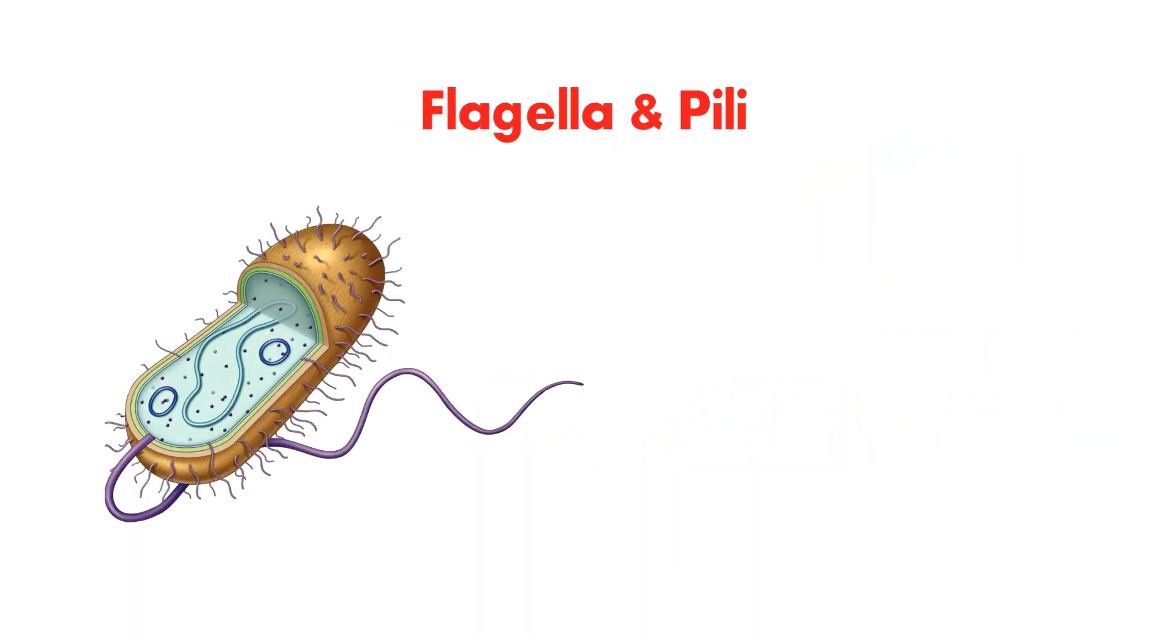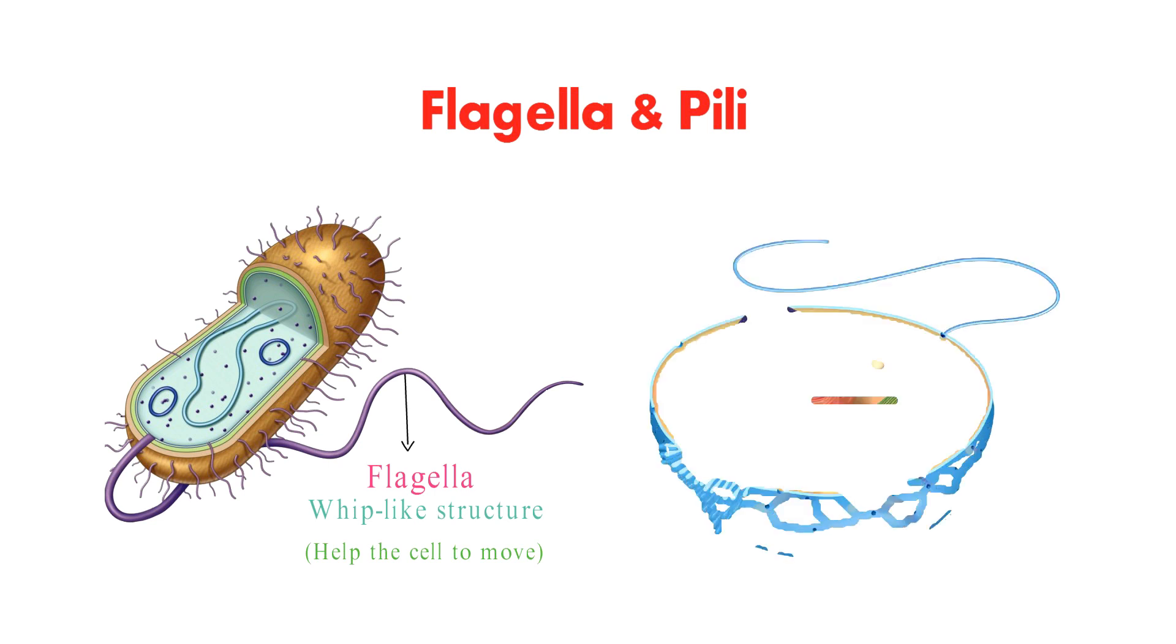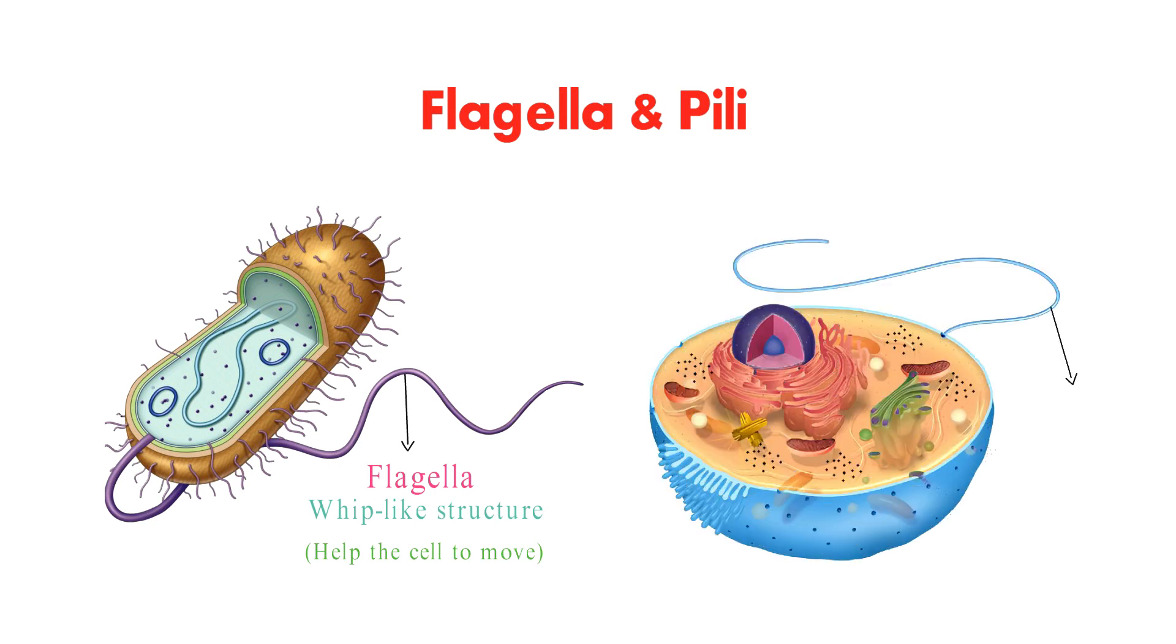Prokaryotic cells may have flagella, which are long, whip-like structures that help the cell move. Eukaryotic cells may also have flagella, but they are typically shorter and more complex than prokaryotic flagella.